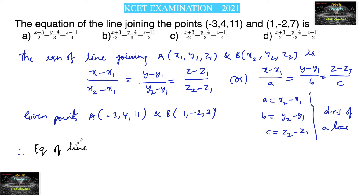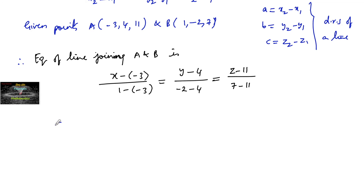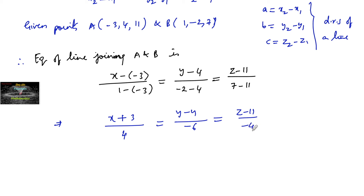Therefore, the equation of the line joining A and B is given by: (x - (-3)) / (1 - (-3)) = (x + 3) / 4, and (y - 4) / (-2 - 4) = (y - 4) / (-6), and (z - 11) / (7 - 11) = (z - 11) / (-4).